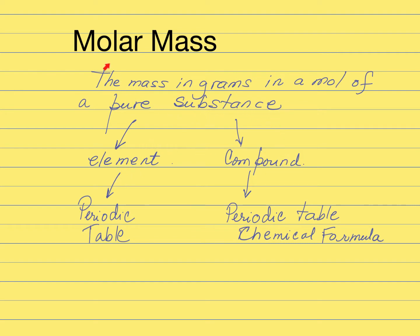When you're looking for the molar mass, it doesn't matter if you have an ionic or covalent compound because you're going to follow the same steps. To find the molar mass of an element is super simple because the only thing that you need is the periodic table.